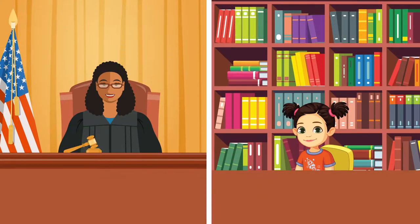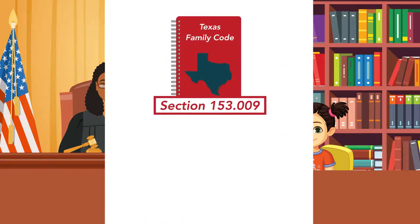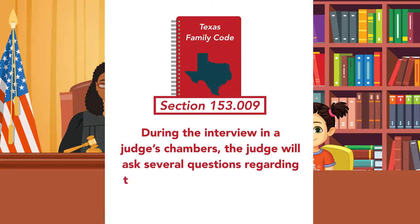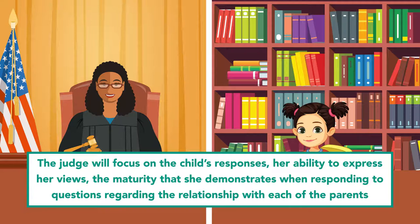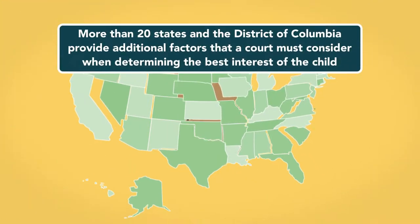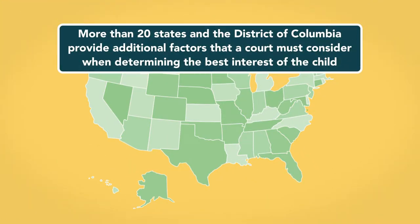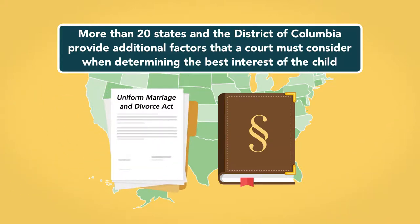A court will determine a child's desires by interviewing her. In Texas, Section 153.009 of the Texas Family Code provides that during the interview in a judge's chambers, the judge will ask questions regarding the child's relationship with her parents, focusing on her responses, ability to express her views, and the maturity she demonstrates. A record of the interview becomes part of the record in the case. More than 20 states and the District of Columbia provide additional factors beyond those in the Uniform Marriage and Divorce Act.